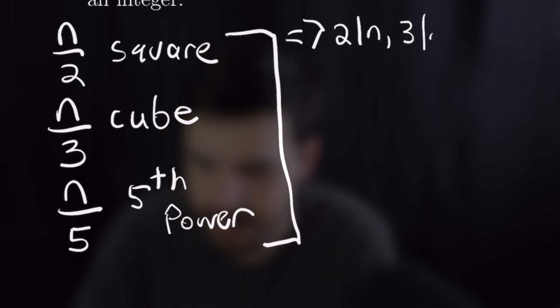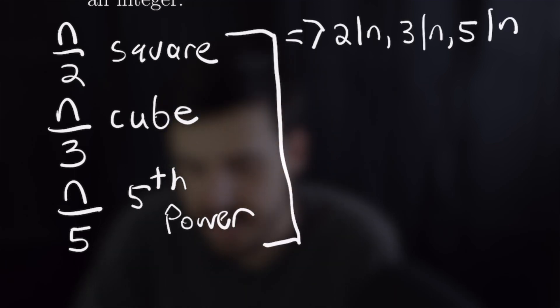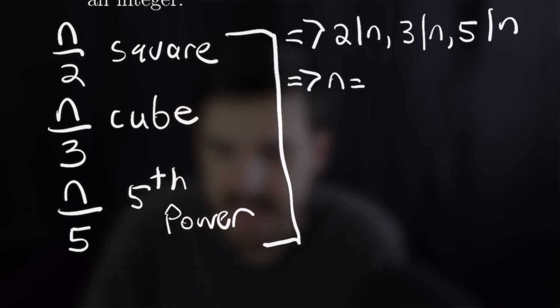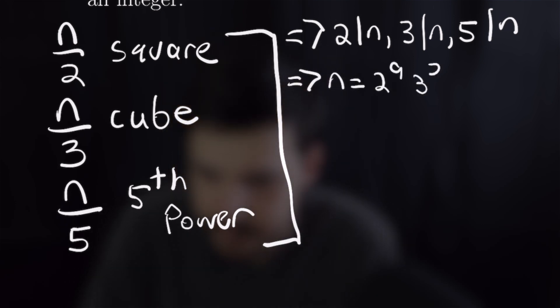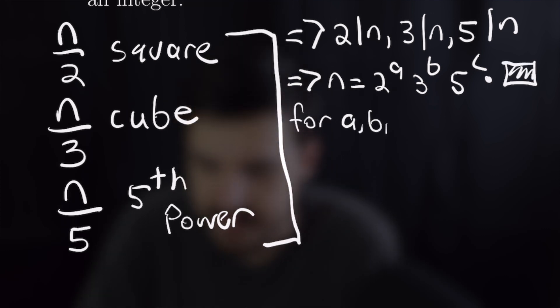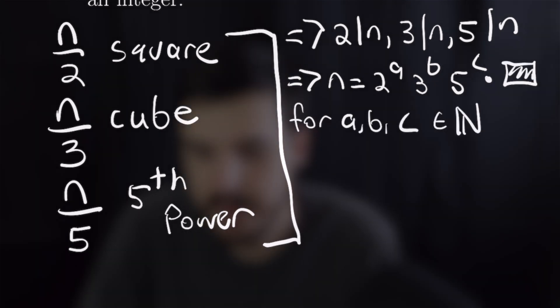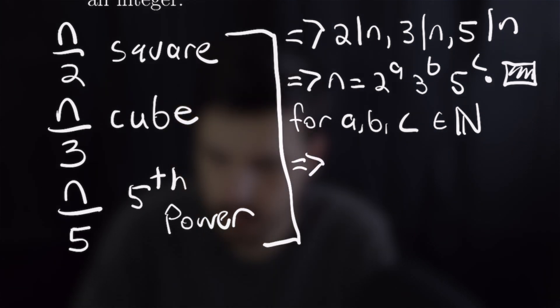Right away we can conclude 2, 3 and 5 will all divide n and that we can express n in the following way: n is equal to 2 to the a times 3 to the b times 5 to the c times some other stuff for a, b and c natural numbers. Now from here we can divide by 2, 3 and 5 respectively to get three new equations.